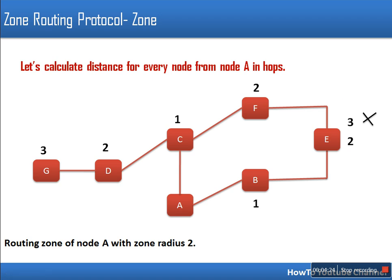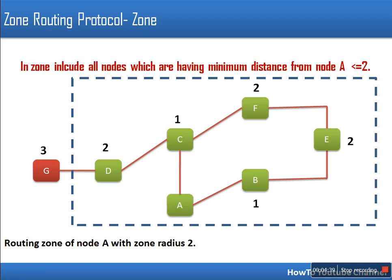Once we have the distance for every node, all nodes with distance less than or equal to the zone radius are inside the zone of node A. Node A is known as the center of this zone. In a similar way, a zone for node F can also be calculated.